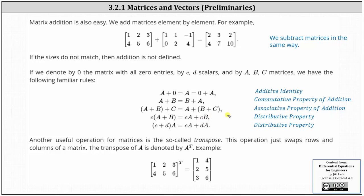The last two properties should remind us of the distributive property, where c times the sum of A and B is equal to c times A plus c times B. Similarly, the sum of c and d times A is equal to c times A plus d times A.